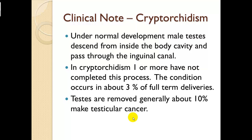Cryptorchidism. Under normal development, male testes descend from inside the body cavity and pass through an inguinal canal. In cryptorchidism, one or more testes have not completed this process. The condition occurs in about 3% of full-term deliveries, and testes are removed about 10% of the time. If one or two testes stay in the abdominal area and haven't dropped down, most of the time it will fix itself, but if they remain in the abdominal area it increases the risk of becoming cancerous.